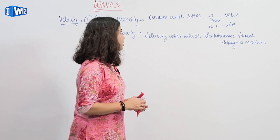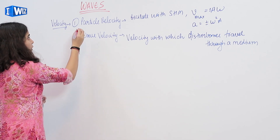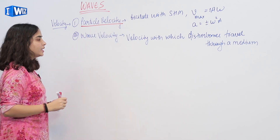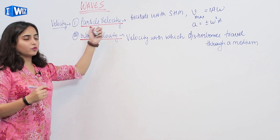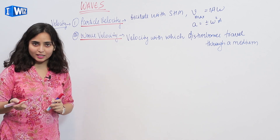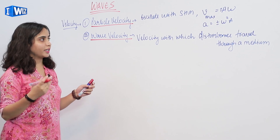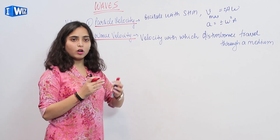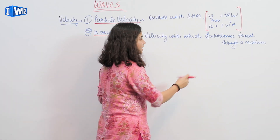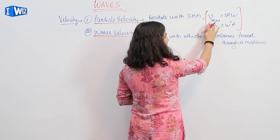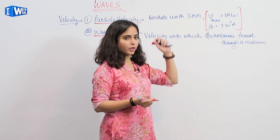After classifying waves, let us discuss velocity. In waves, we have two types of velocity: particle velocity and wave velocity — the velocity at which the particle is oscillating, and the velocity at which the wave is propagating. Since the particle follows simple harmonic motion, maximum velocity is aω and acceleration is ω²a.